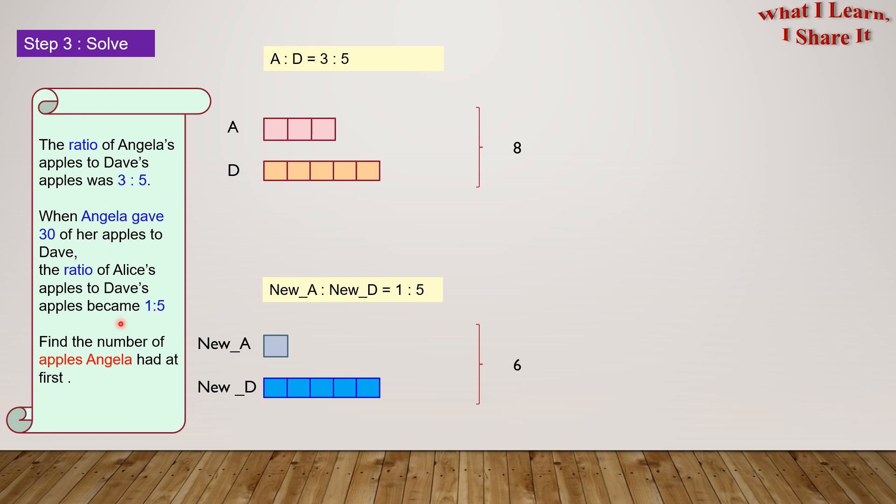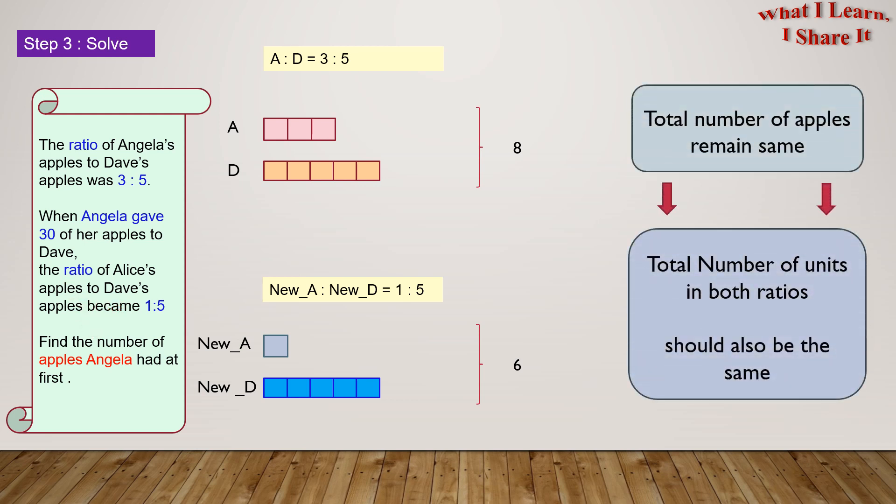According to our question, the total number of apples should be the same. This means that the total units in both the ratios should also be the same. Let's try to achieve this.